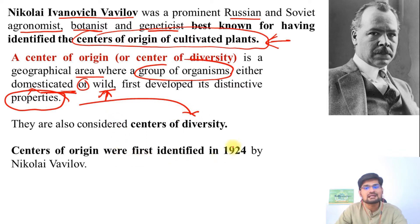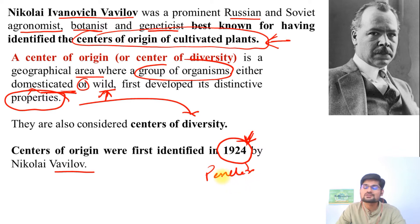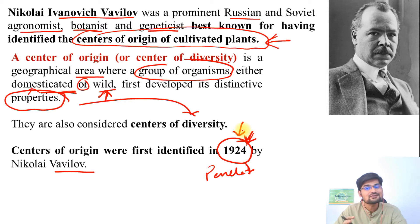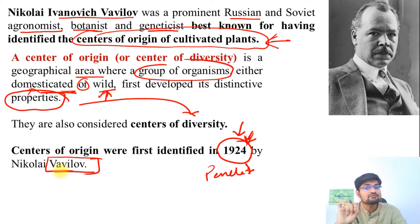Centers of origin were first identified in 1924 by Vavilov — notably the same year Penck's book was published, Emmanuel de Martonne published Principles of Human Geography, the first geography department was established in India at Aligarh Muslim University, and Jali's isostasy theory also appeared. So 1924 is a very interesting year — lots of sciences were being developed all around the world, and one of them was Vavilov's center of origin concept.